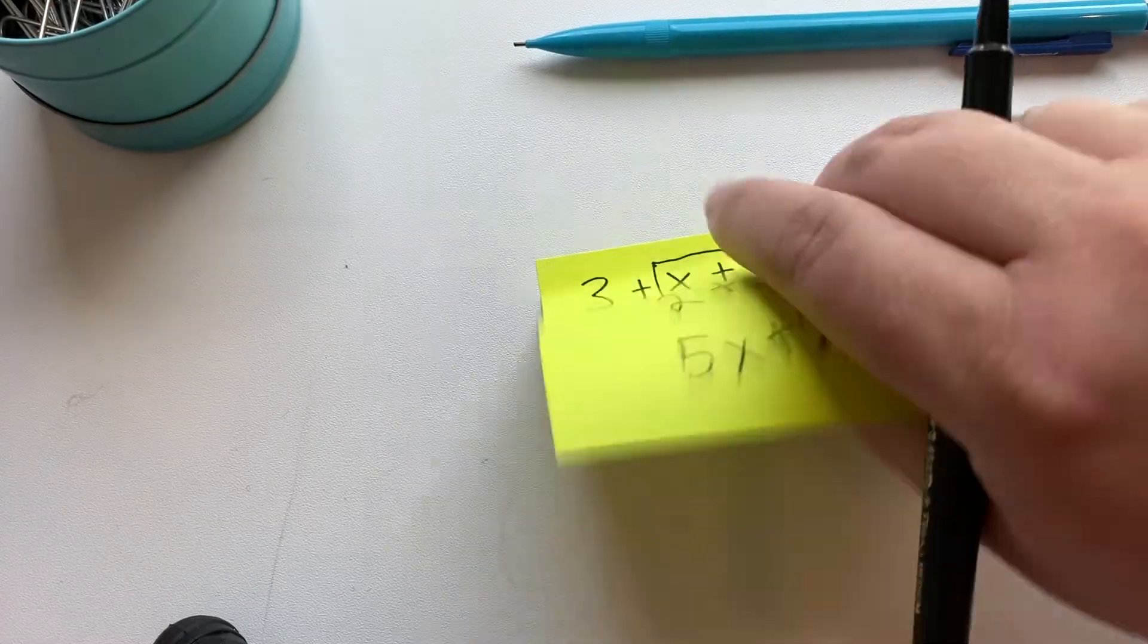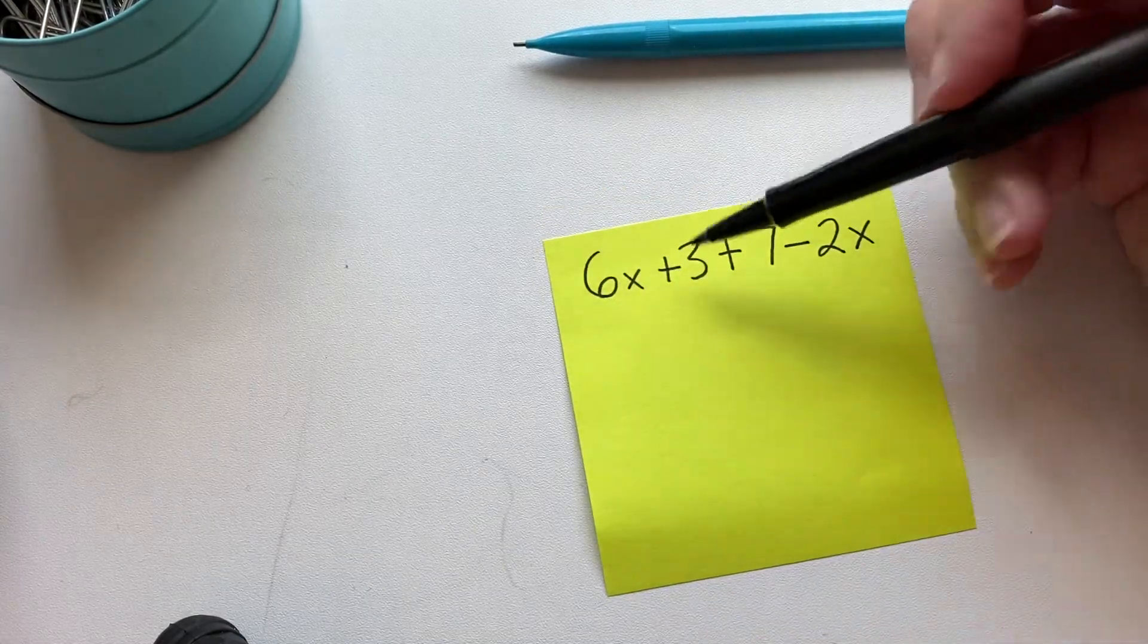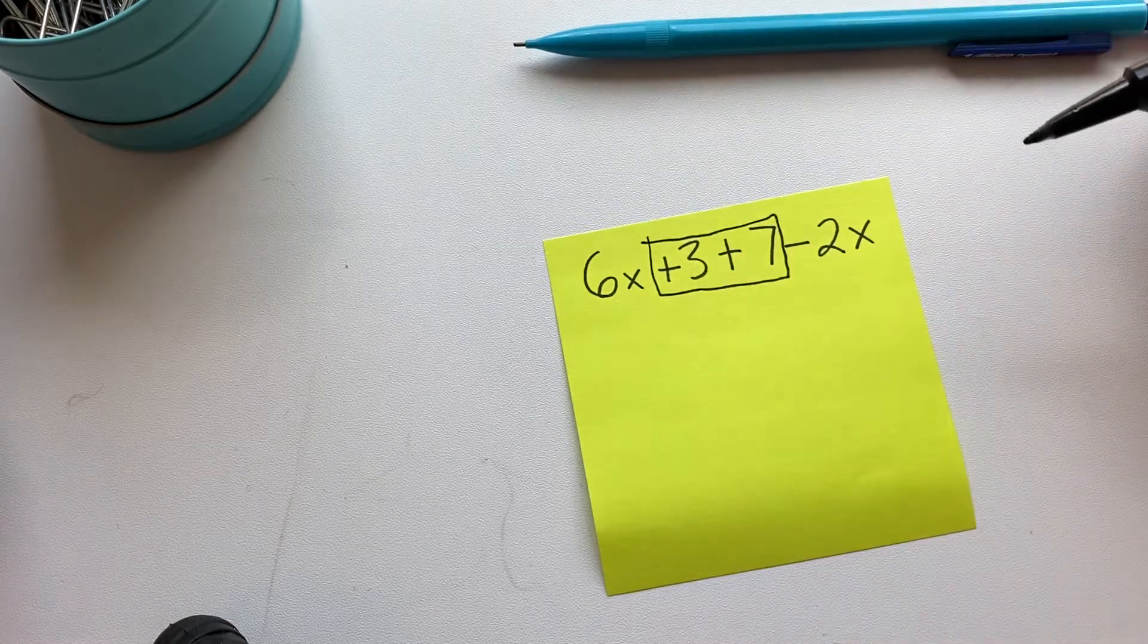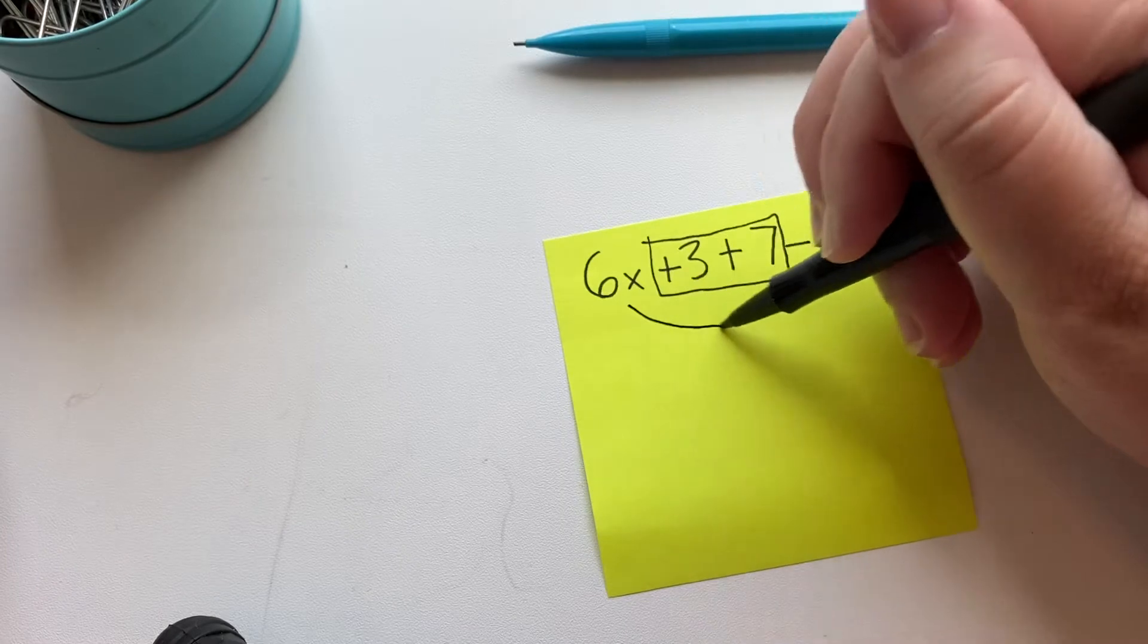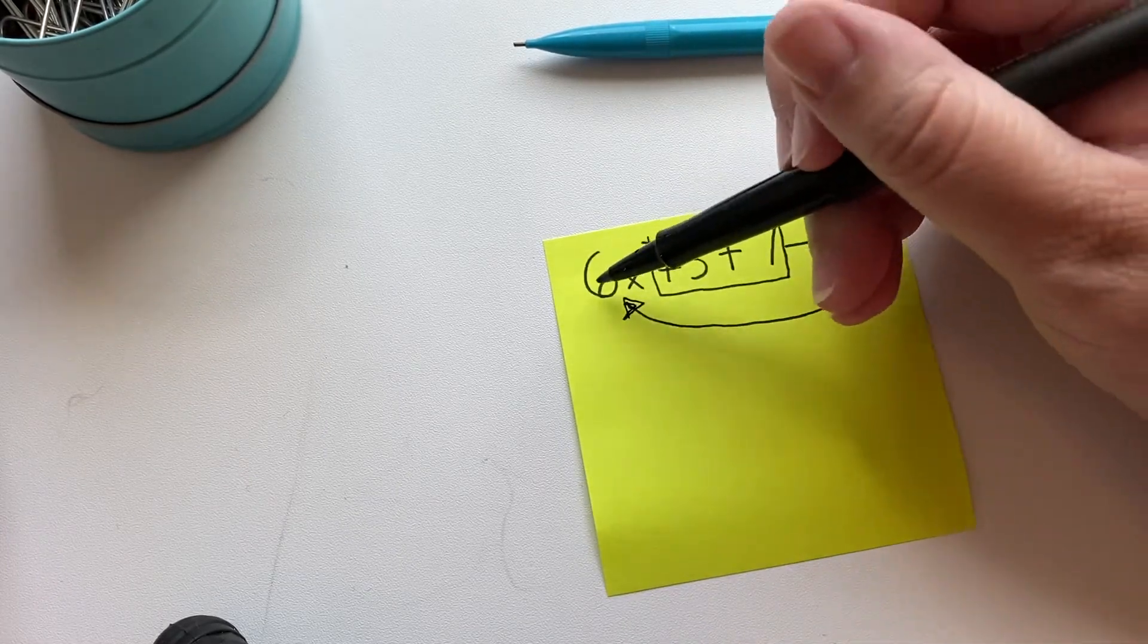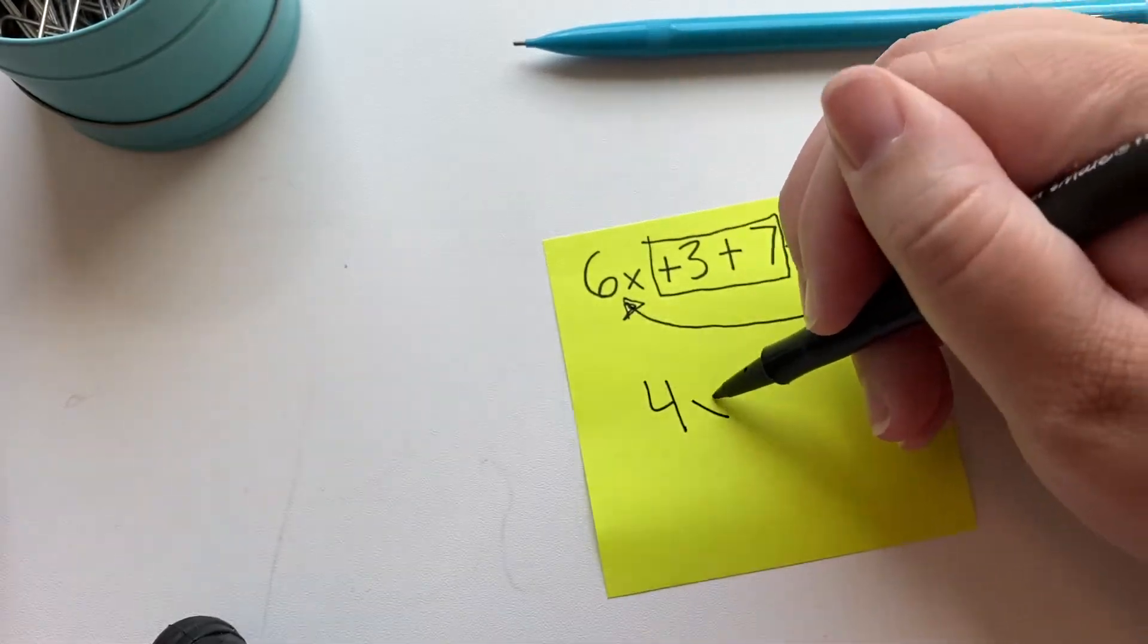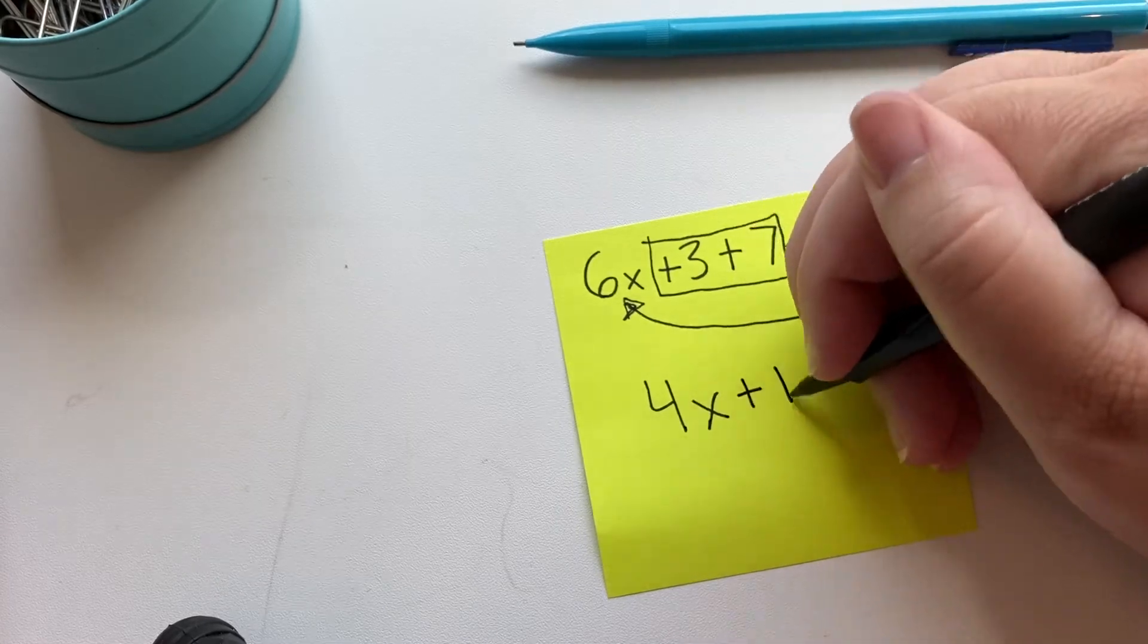Okay, and then we're going to go to our last example. So these are our constants or our integers. And then outside here we have our variable x. 6x minus 2x would be 4x. And 3 plus 7 is 10, plus 10.